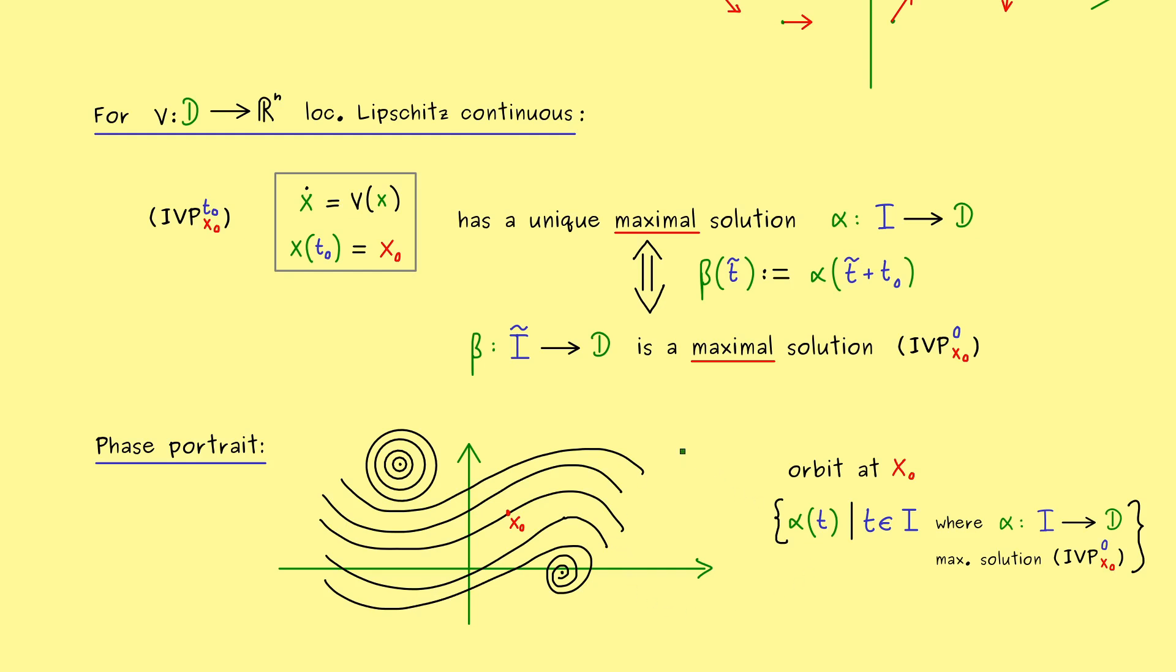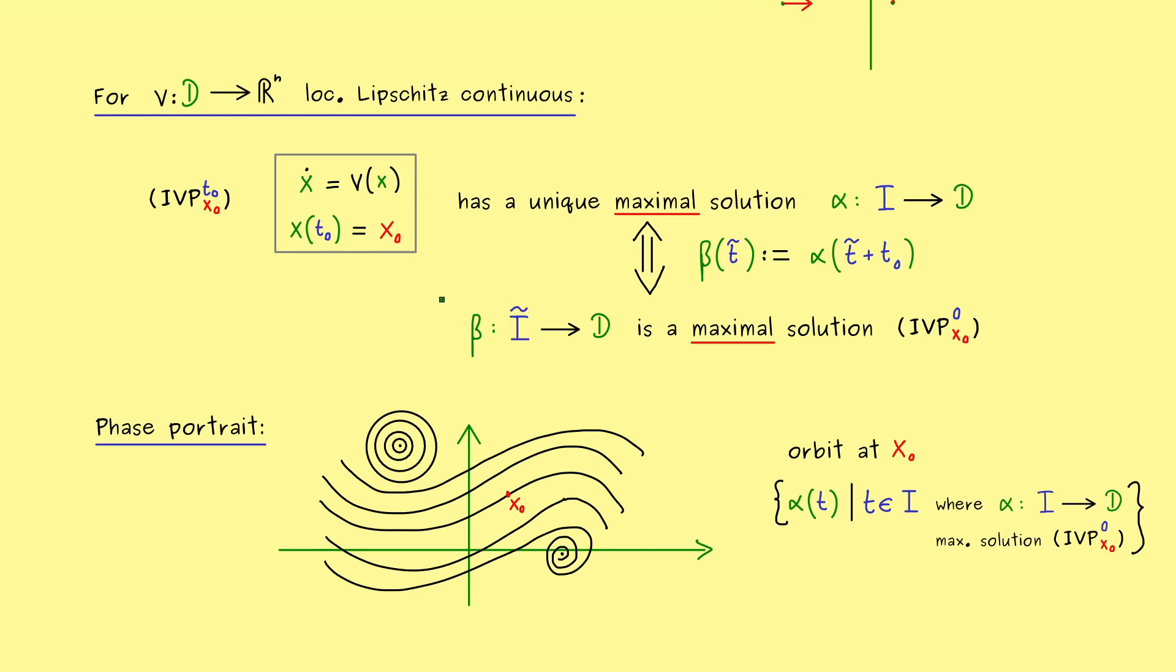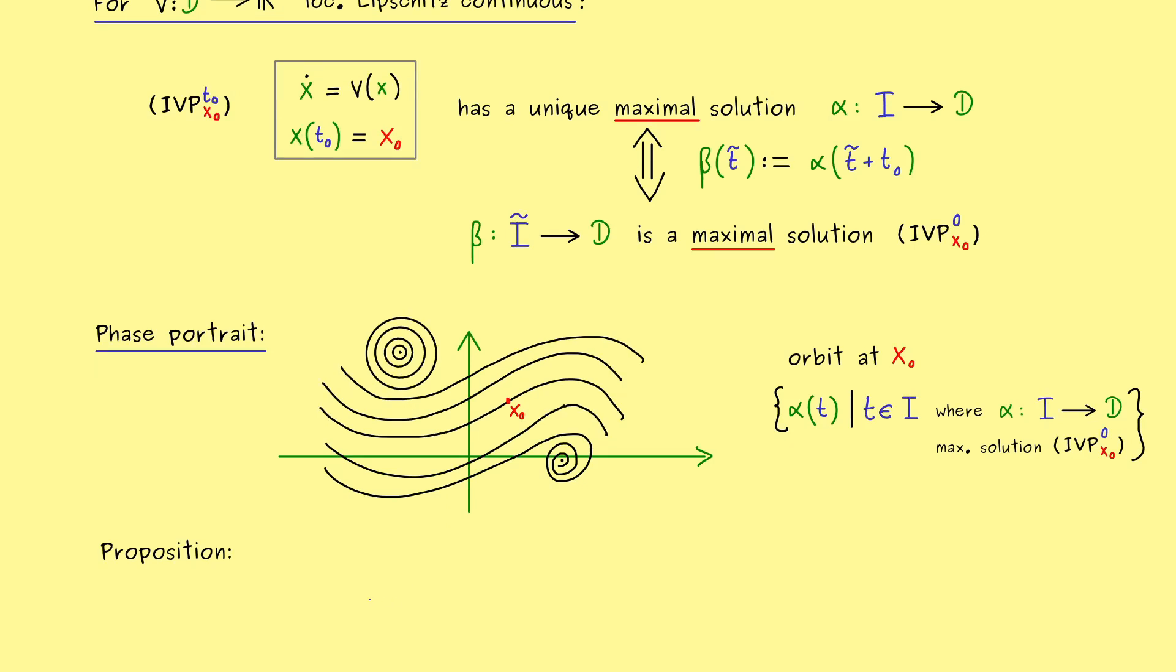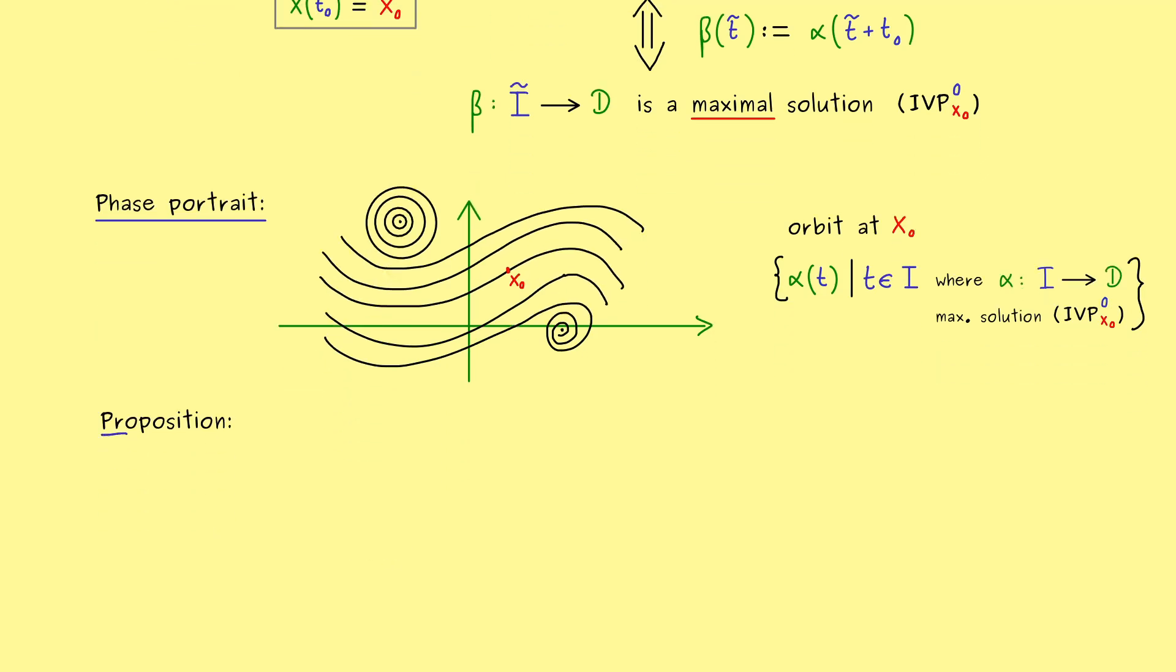So let's formulate a whole proposition for this fact. Indeed, I could already summarize what comes now by saying that the orbits split up the whole phase portrait. And by this we essentially mean two important points: existence and uniqueness.